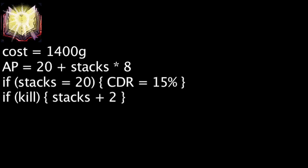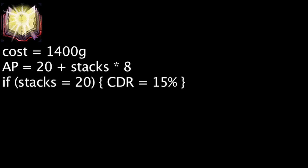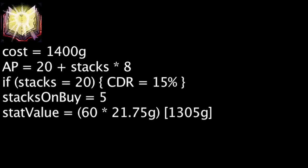2 stacks are gained on a kill, 1 stack is gained on an assist, and half the current stacks are removed on death, with the amount removed rounding down to the nearest integer. The item now starts with 5 stacks initially, meaning one wastes 95 gold on stats when first purchasing this item.